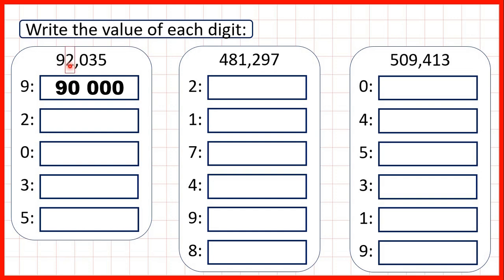We have 2 in our thousands, so that's 2,000 — 2 followed by 3 zeros, because we have 3 digits after the 2 in our number. Now we have 0 in our hundreds, but it doesn't matter which place value 0 is in. It always stands for 0. Zeros don't give numbers value in themselves; what they do is make sure that other digits are written in the right place values. That's why zeros are often called placeholders.